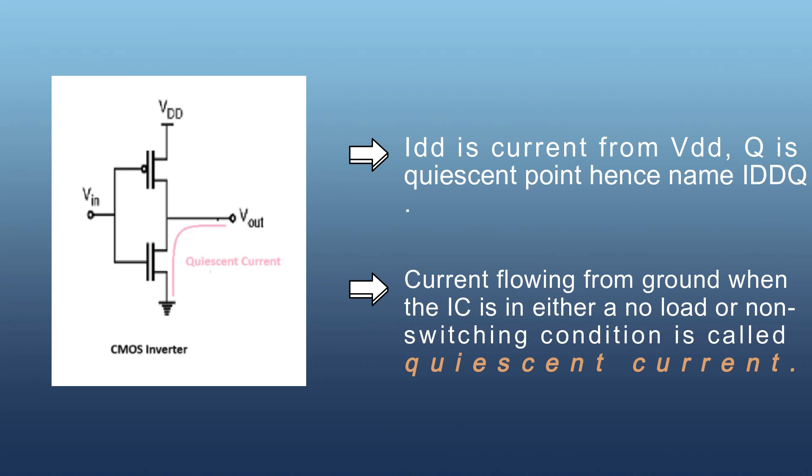Non-switching means when VIN is stable to a fixed value for a long time and we don't change its value. If we keep VIN equal to 1 for some time, then VOUT will be 0. CMOS inverter will be at quiescent condition because there is no load at VOUT and VIN is also stable for a long time. Then current flowing from ground to VOUT is quiescent current.